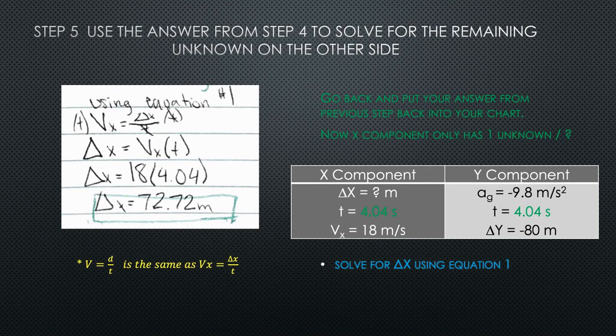Now that you found time, go back and put it in both sides of your chart. Now you will have only delta X missing from the X component, which means you can solve for it using equation 1.